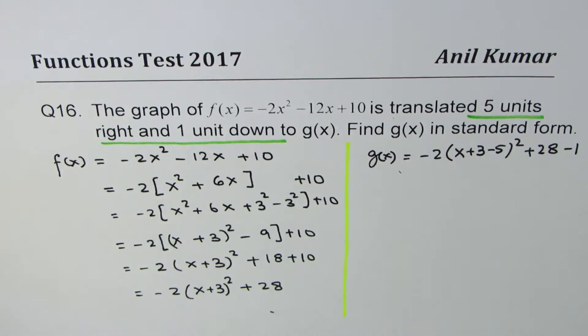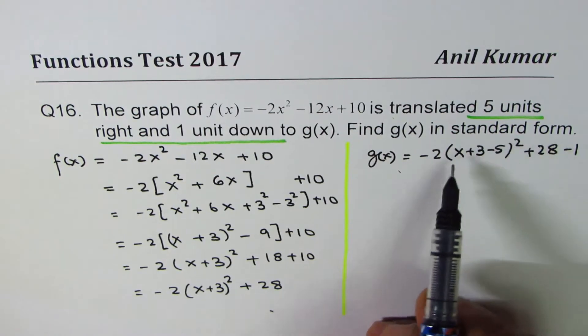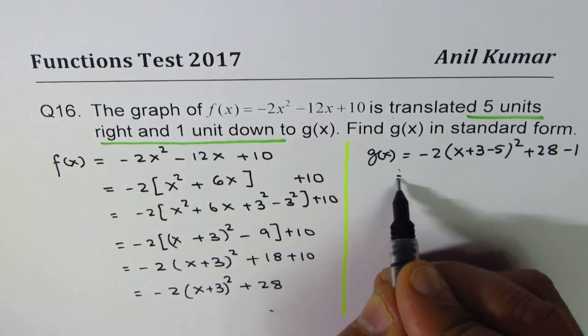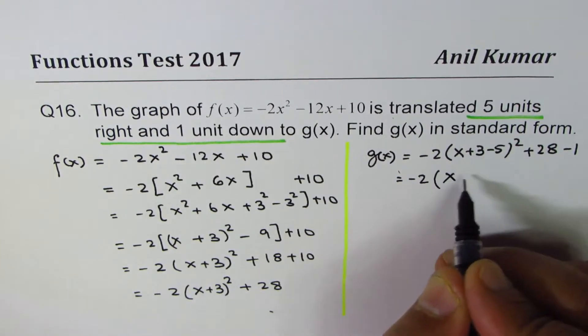Since we want to do it in standard form, we need to simplify this. We get -2(x - 2)² + 27.